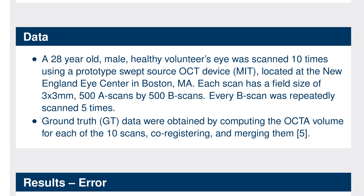The data used for evaluation were acquired from the eye of a 28-year-old volunteer at the Newman Eye Center, Boston, using a prototype OCT device developed by our collaborators at MIT in Cambridge, Massachusetts. The volunteer's eye was scanned 10 times to allow the computation of a ground-truth OCTA volume, but each B-scan in each of these 10 scans was repeatedly scanned 5 times to allow the computation of angiography for each scan. The 10 scans were co-registered using the non-rigid OCT motion correction technology by Plona and Carls. After registering, the 10 OCTA volumes were merged into a low-noise ground truth, and one of the 10 scans was picked as a test scan for reconstruction.